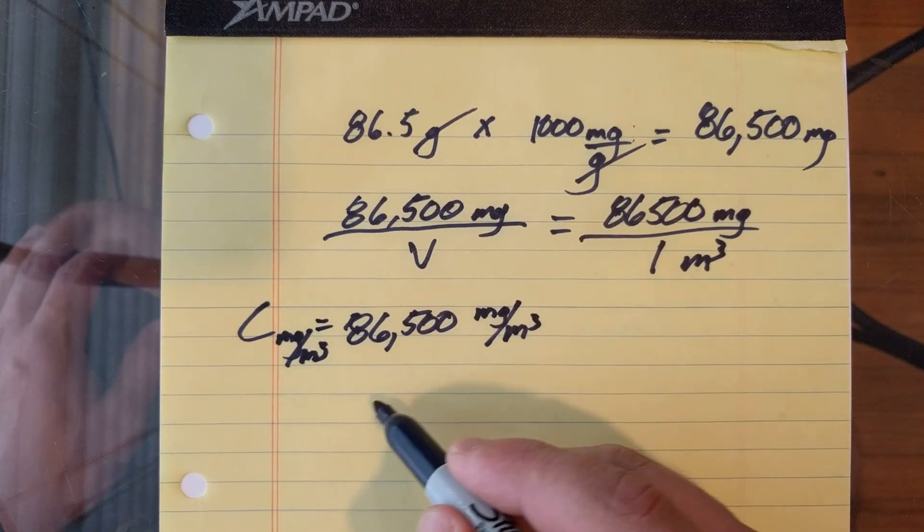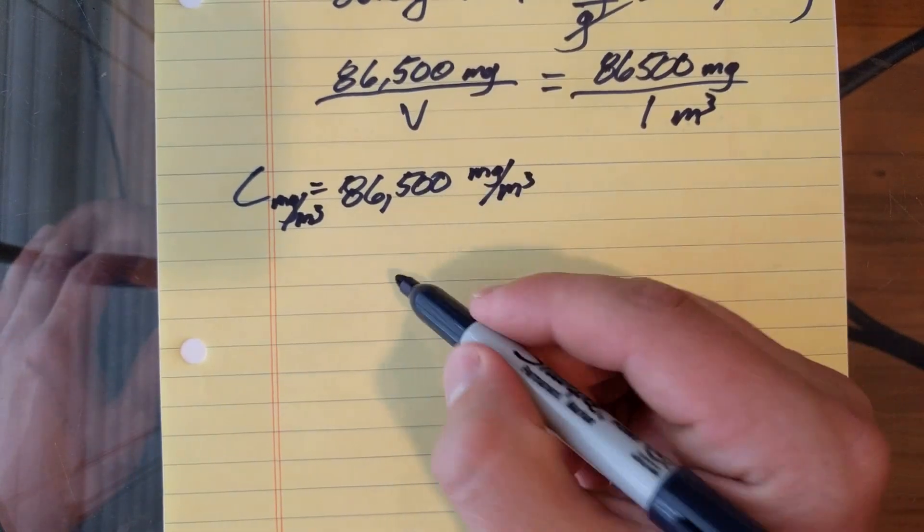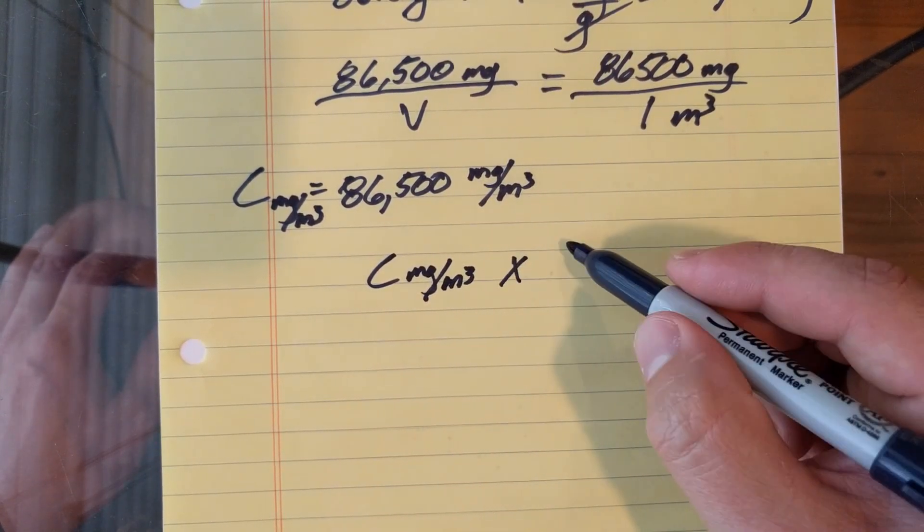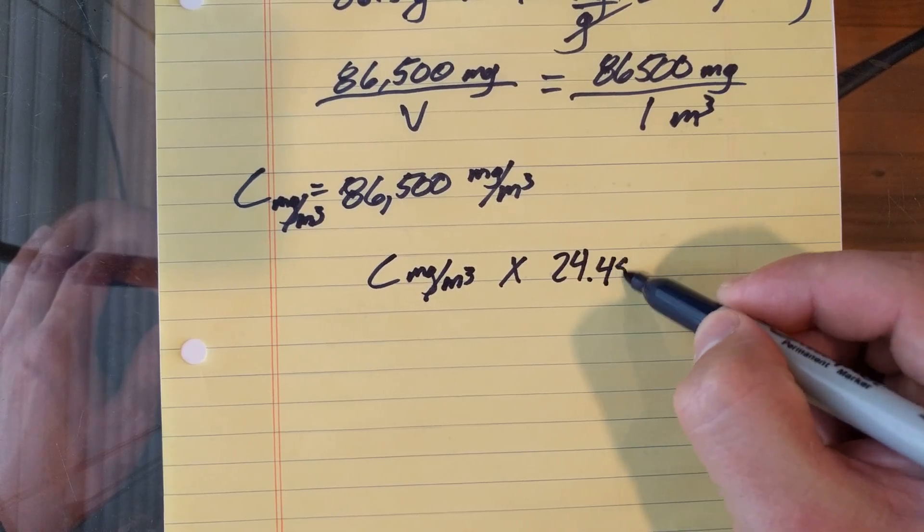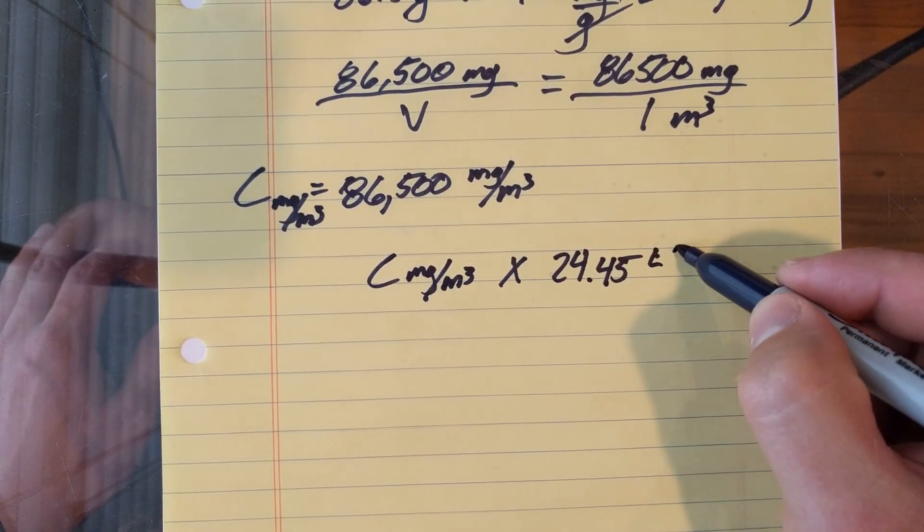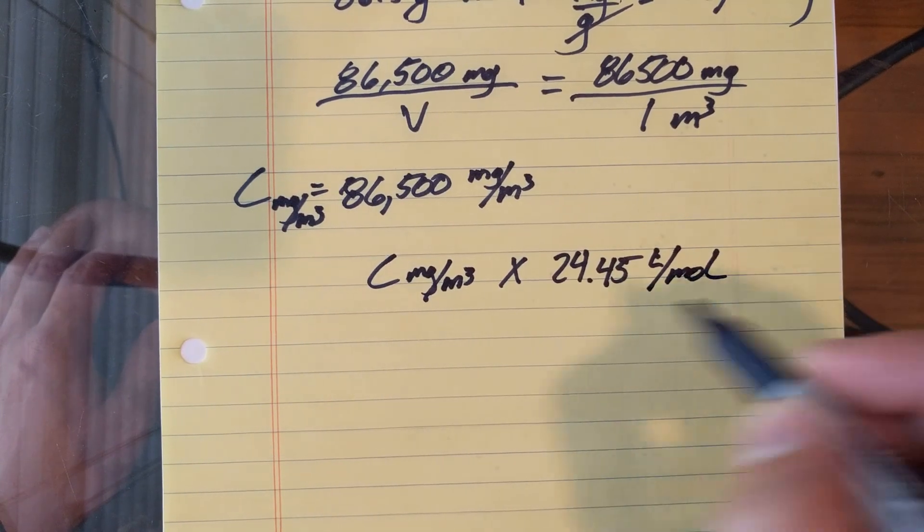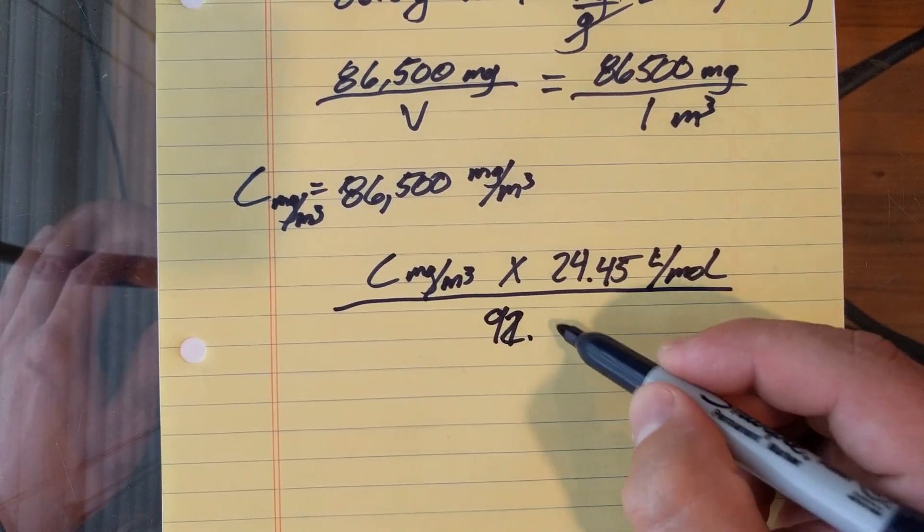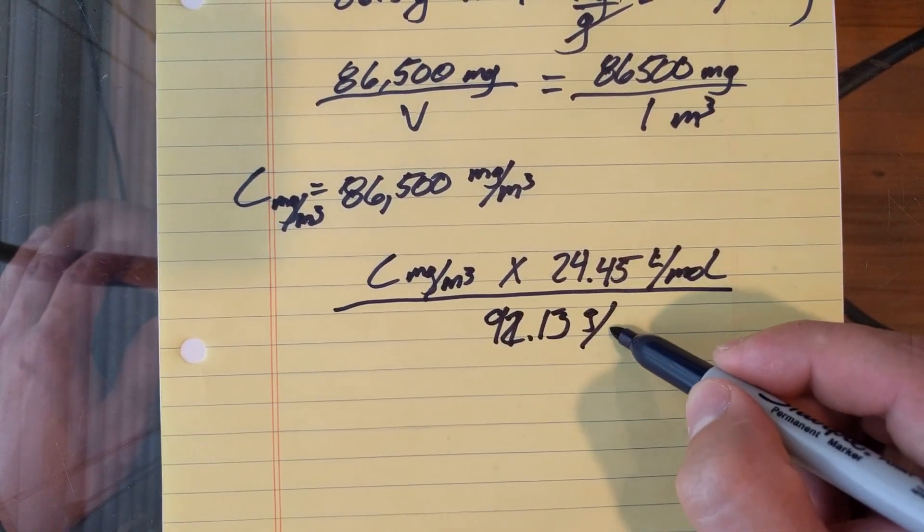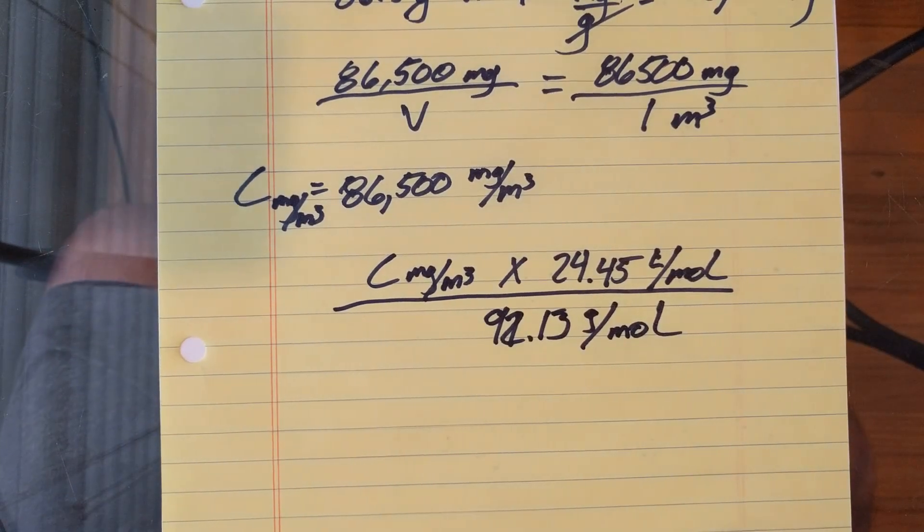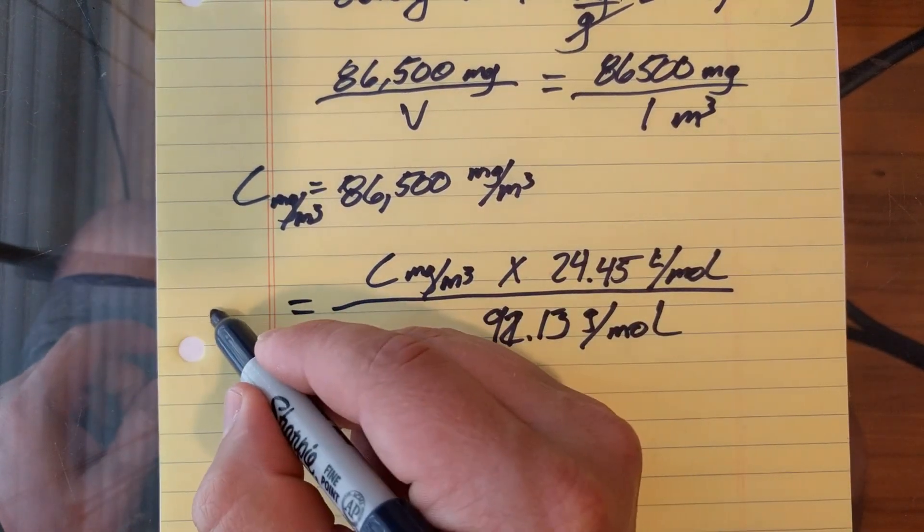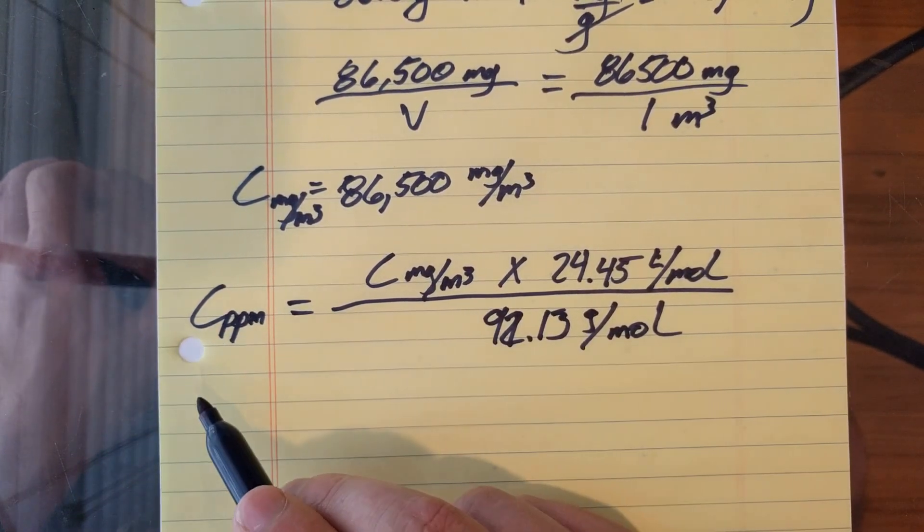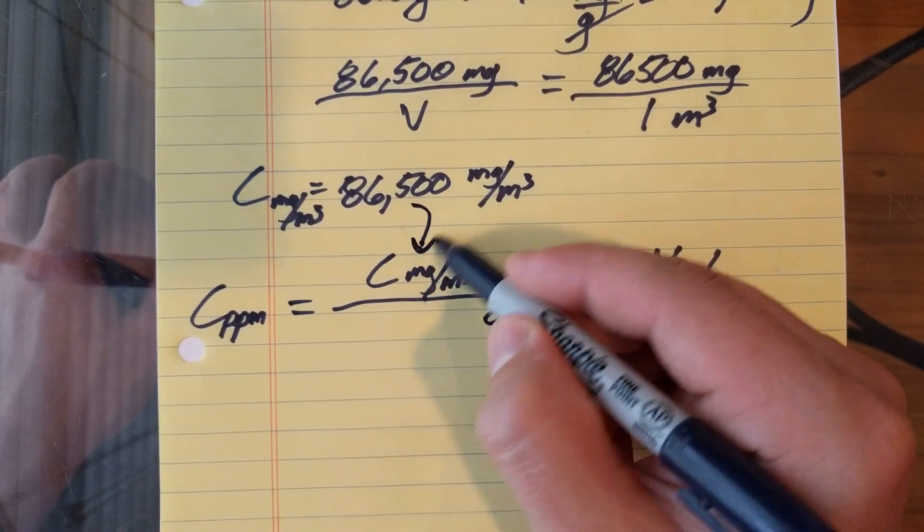Now we can plug it in to our formula: 86,500 milligrams per meter cubed times 24.45 liters per mole, and then divide by 92.13 grams per mole. And that will give us our concentration in parts per million volume.